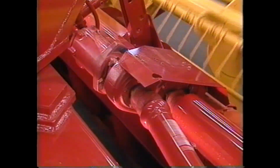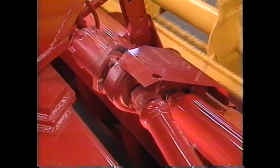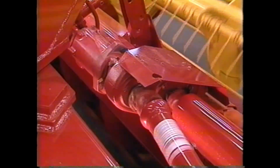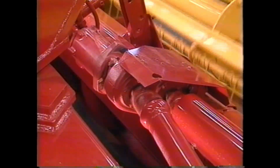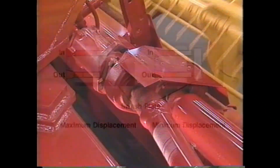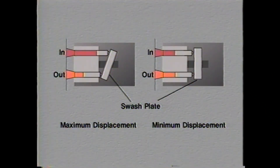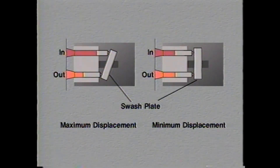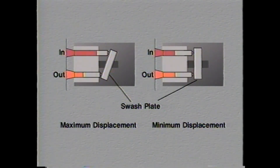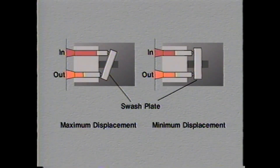Piston motors allow the most flexibility and can be fixed or variable displacement. Displacement depends on the angle of the axis or swashplate. Variable displacement motors can be controlled by a compensator valve, which changes the angle of the swashplate to increase displacement and torque.